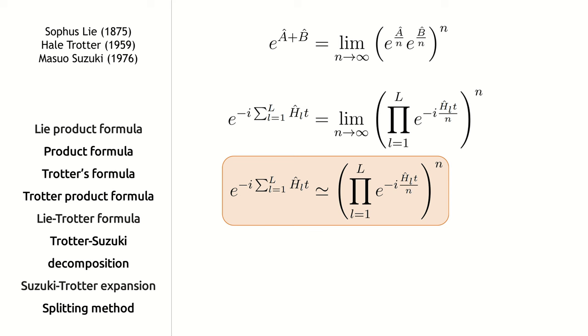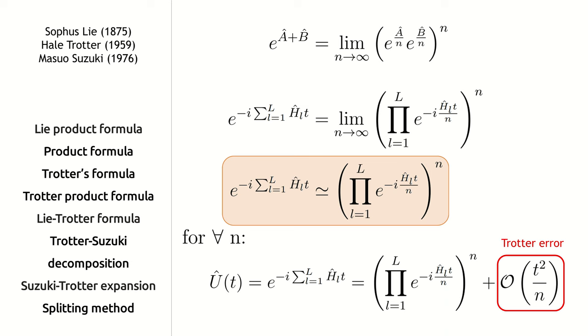Otherwise, it can be shown that for this formula the error scales as big O of time squared divided by n. The letter n denotes the number of trotter steps. This number must be chosen so that the simulation error reaches the desired value.